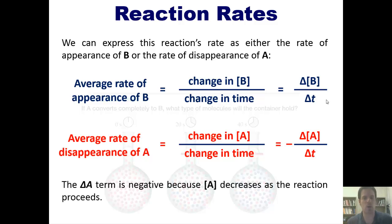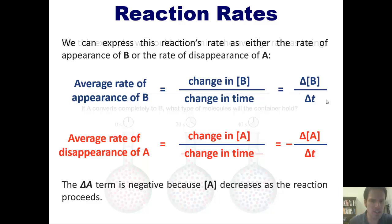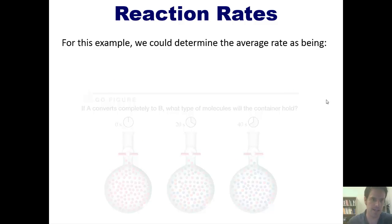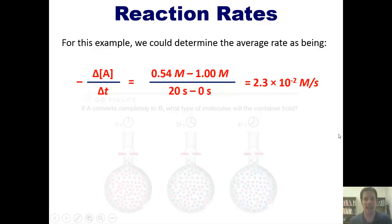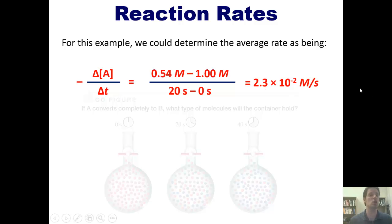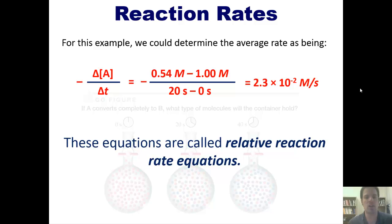The delta [A] term is negative because A is a reactant that is disappearing as time moves forward, since it converts into B. For this example, we can determine the average rate as the change in concentration of A over time: (0.54 M minus 1 M) divided by (20 s minus 0 s), giving an answer of 2.3 times 10 to the negative 2 molars per second. These equations are called relative reaction rate equations.